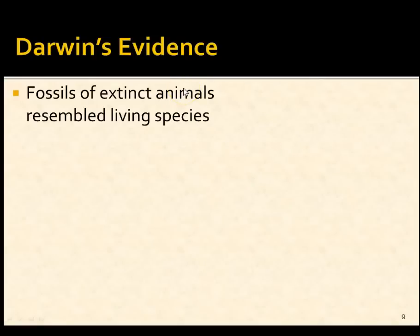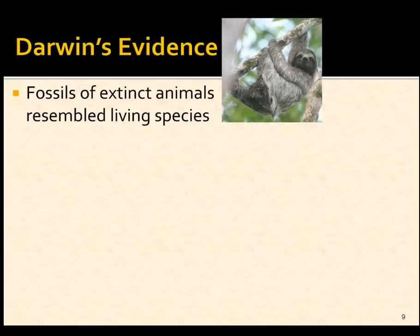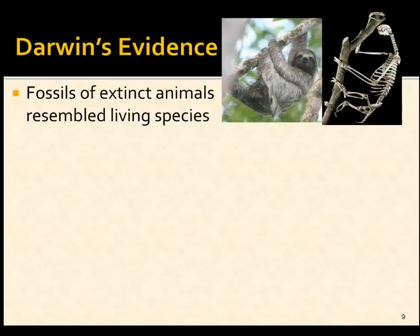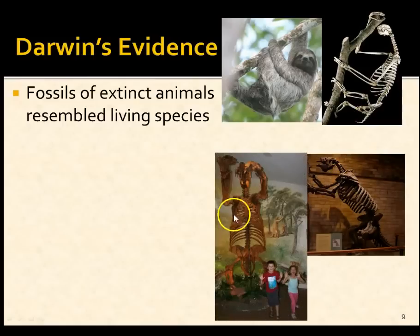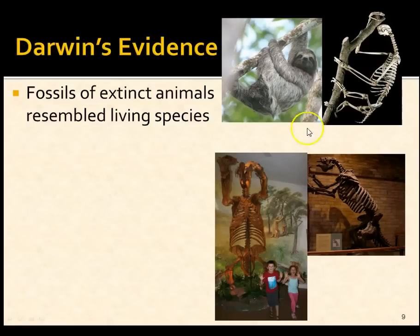Some of the evidence Darwin accumulated was that extinct animals resembled living species. He found fossils of a giant sloth — a creature with a very similar skeleton to the modern sloth, except this one was anywhere from 10 to 12 feet tall. But it looked a lot like the living creature we know today.